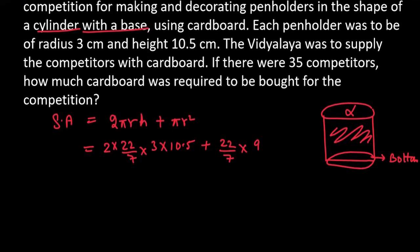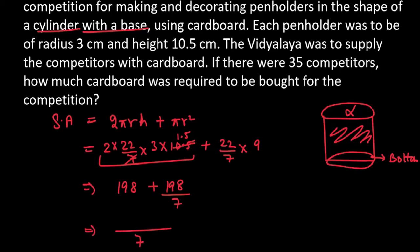Now we will simplify to get the final answer. You can see that 7 and 10.5 can be cancelled, giving 1.5. Multiplying: 44 × 3 × 1.5 gives 198. For the last term, 22 × 9 = 198, divided by 7. Solving using LCM — multiply the first term by 7 — gives (1386 + 198) / 7. The final answer for one cardboard comes out to be 1584/7 cm².